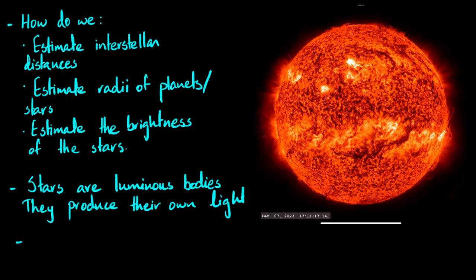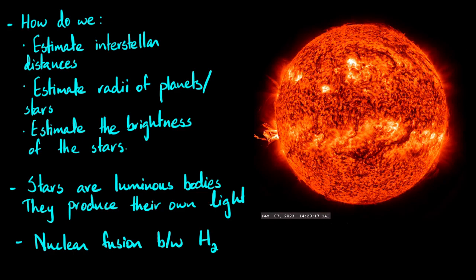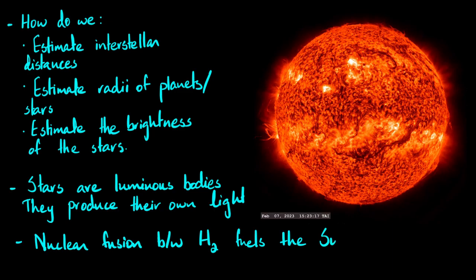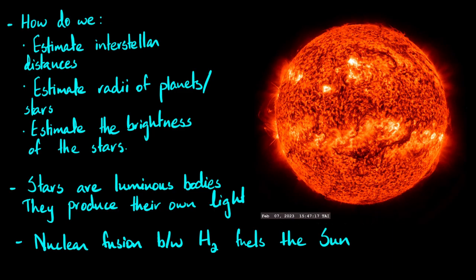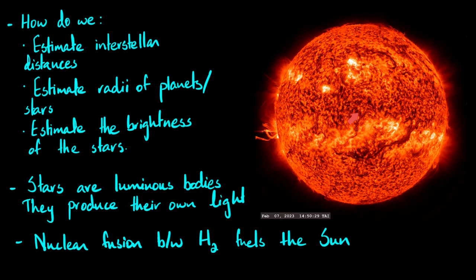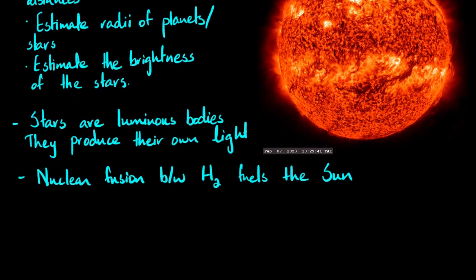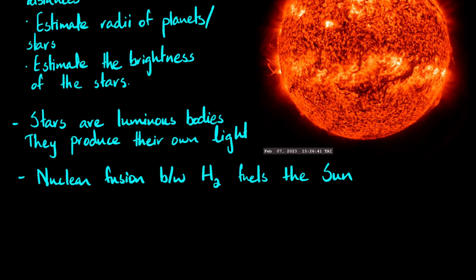The Sun is a continuous source of energy, at least for the near future. This energy needs to be fueled by something, and in the case of the Sun that fuel is nuclear fusion between hydrogen atoms. At very high temperatures in the core, hydrogen fuses together, and this is what consistently powers the Sun.